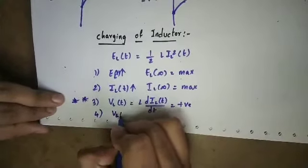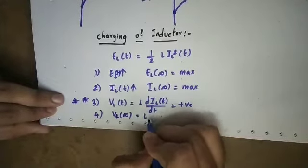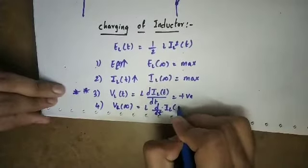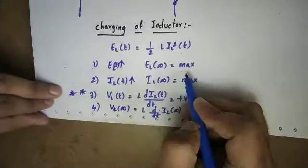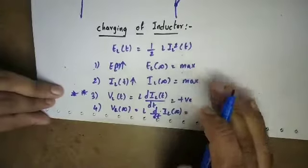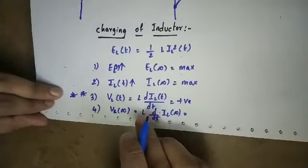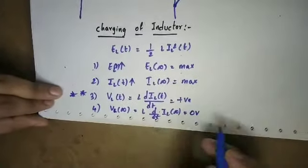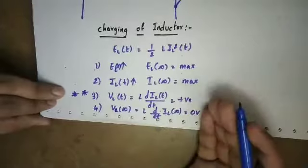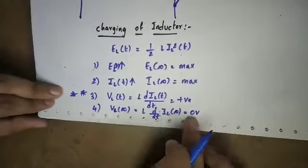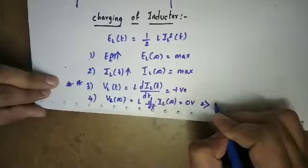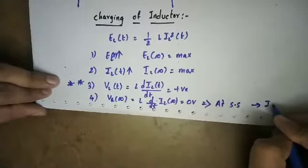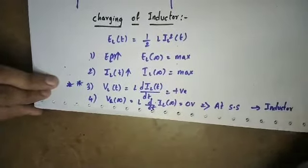Fourth point: steady state. VL of infinity equals L into d by dt of IL of infinity. At infinity, IL is maximum and constant. Derivative of constant is 0. So L into 0 is 0. So VL of infinity is 0 volts. During charging at steady state, the voltage is 0.